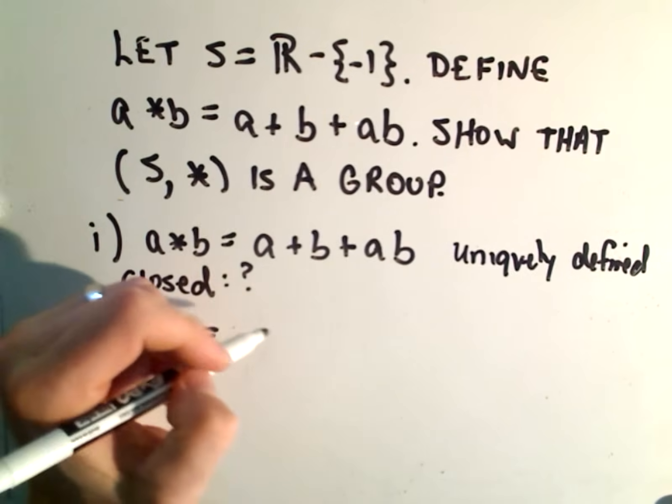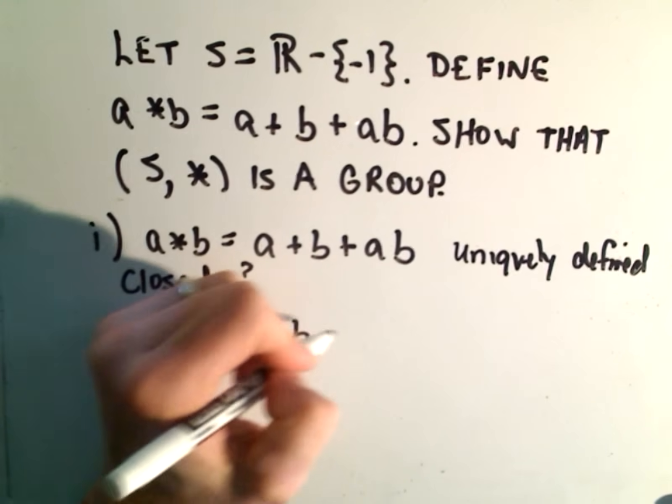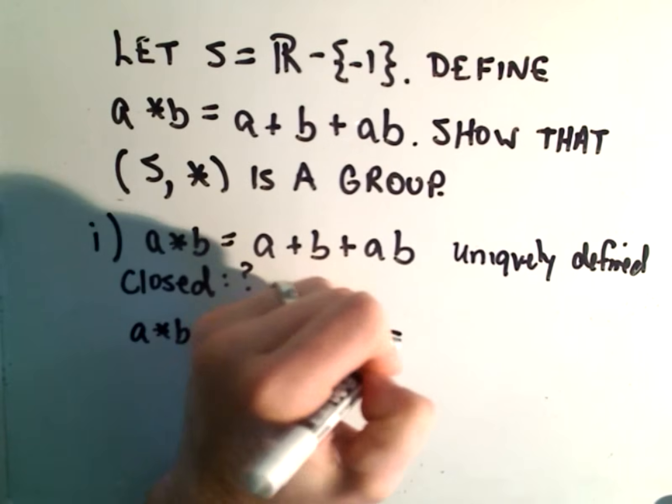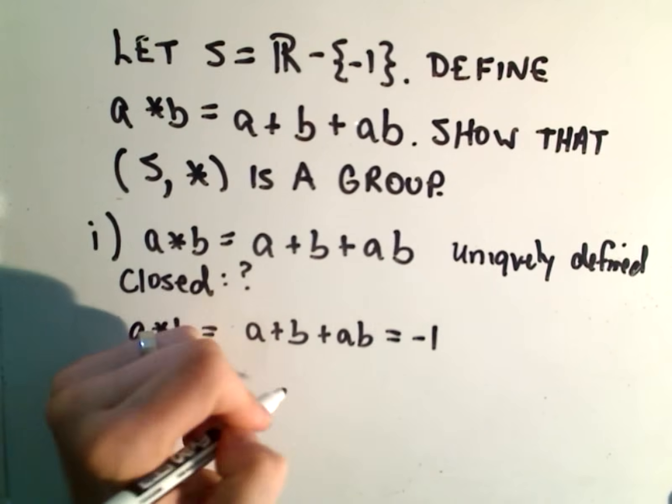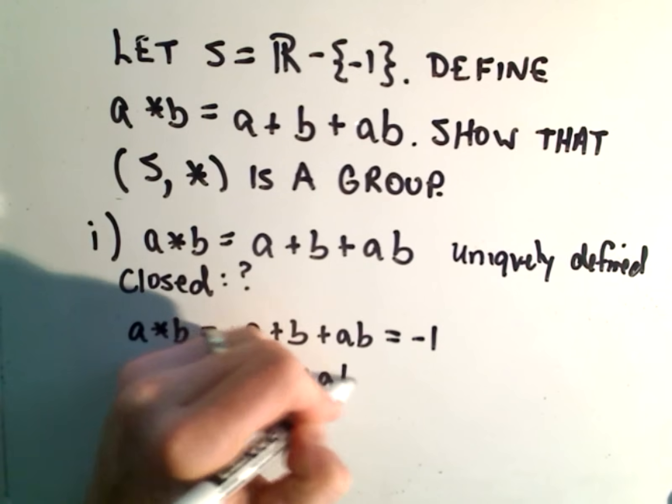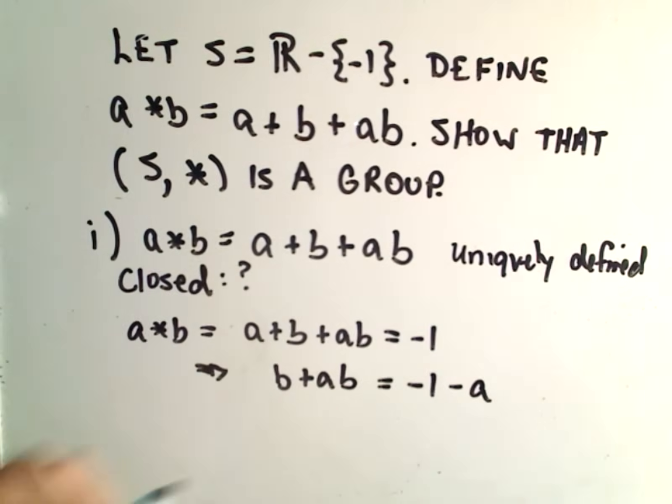If A star B were to equal negative one, that means A plus B plus AB equals negative one. We can subtract A, so we'll get B plus AB equals negative one minus A.